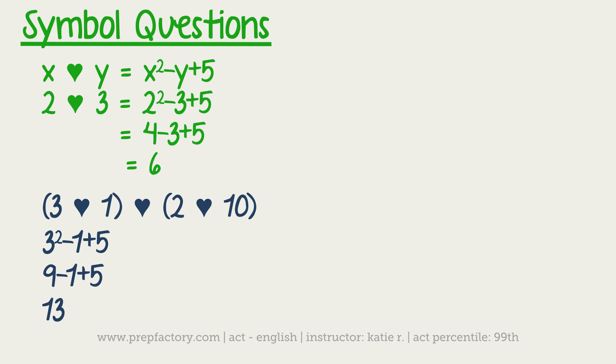So if 13 is the answer for just 3 heart 1, I know that this whole thing is going to be added back in, but I'll keep it off to the side for a second. I've got that 3 heart 1 is 13. Now I want to figure out what is 2 heart 10. So 2 heart 10, same thing: 2 is x and 10 is y, so we would have 2 squared minus 10 plus 5, which would give us 4 minus 10 plus 5, which would give us negative 1.